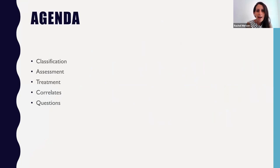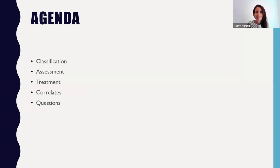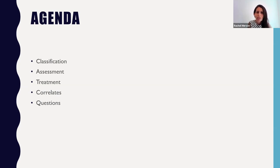We're going to break the presentation down into several areas. First, we'll talk about some research on the classification of Selective Mutism, then assessment measures, then treatment, and lastly correlates — things that are related to SM. We'll also have some time for questions. Feel free to ask questions through the Q&A feature of Zoom, and while you can wait until the end, you can also ask questions as we go.